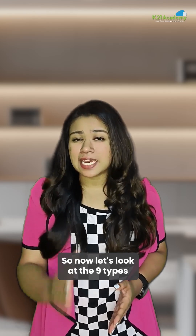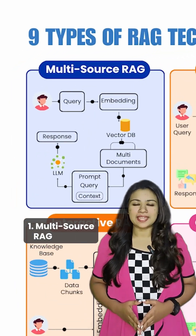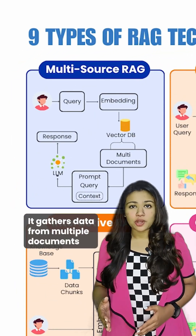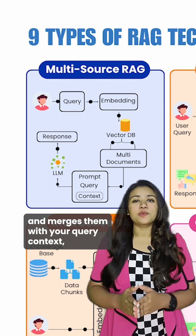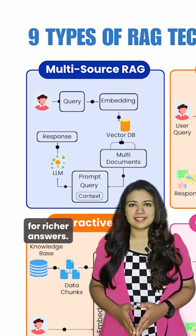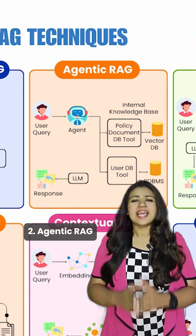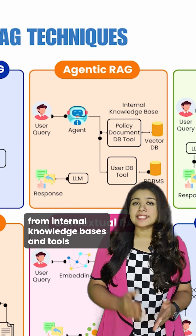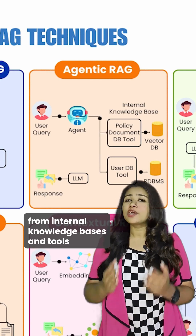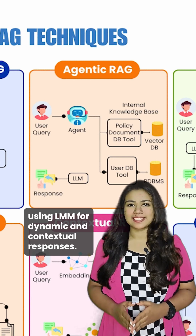Now let's look at the 9 types of RAG techniques. 1. Multi-source RAG: it gathers data from multiple documents and merges them with your query context for richer answers. 2. Agentic RAG: an agent pulls information from internal knowledge bases and tools using LLMs for dynamic and contextual responses.